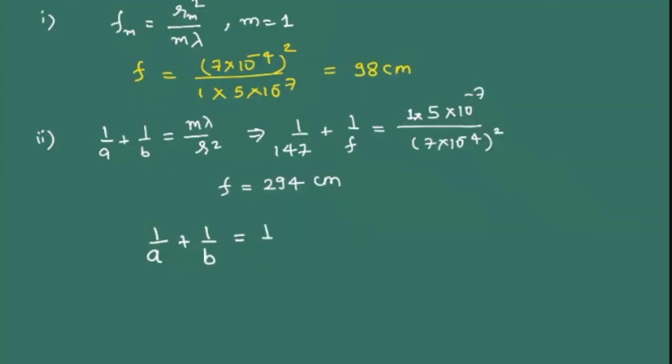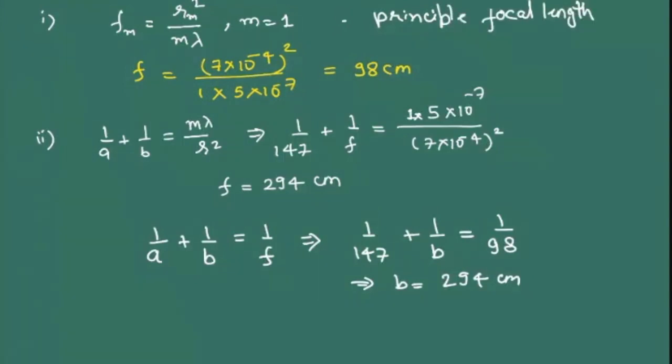There is another way to do it. Since you are comparing this as a convergent lens, we can also write it as 1/a which is the object distance, 1/b which is the image distance, because a is the distance from source to zone plate and b is the distance from zone plate to screen, which is how we write it for lens: 1/u + 1/v = 1/f. If I write my f I have already calculated, which you got it as 98 centimeters. So you can write 1/147 + 1/b = 1/98, which will also get you the same result for b as 298.